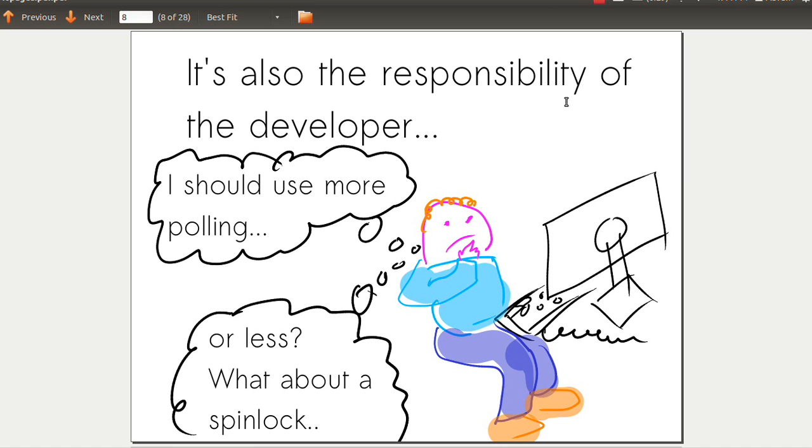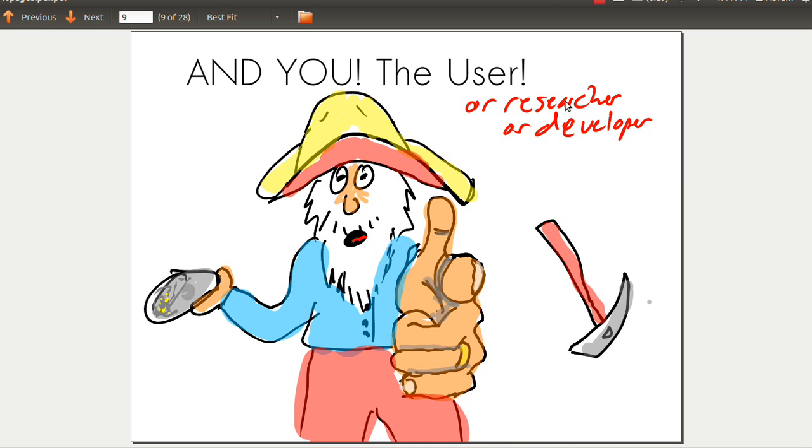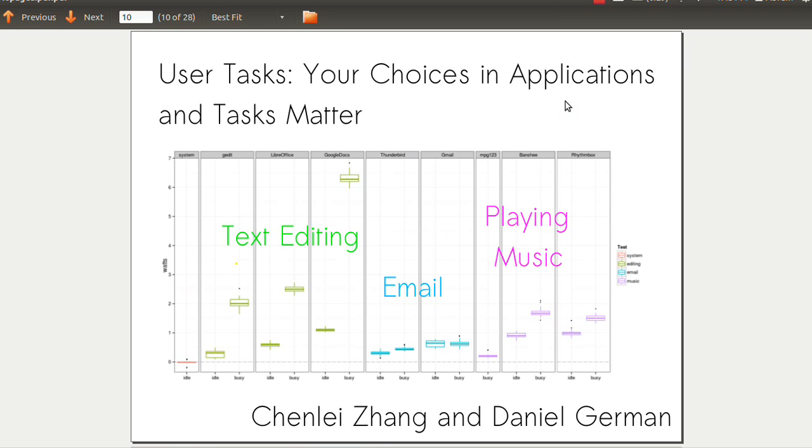Developers are responsible for using resources and reacting to events, and their choices affect power consumption. If they choose between polling or blocking, it can make a big difference. Furthermore, you, the user, have a say in power consumption. You have tasks to be done and can choose between different applications that solve the same problem. Your applications usually have alternatives with different properties with respect to power.